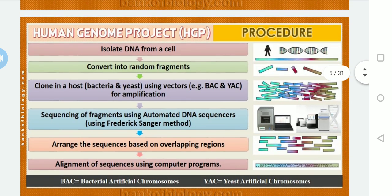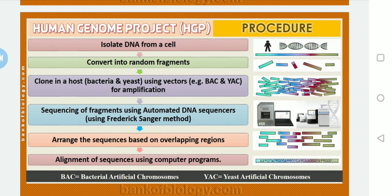When it comes to the procedure used in HGP, this is very important and may be asked as an exam question. The commonly used hosts for sequencing were bacteria and yeast as vectors. These are known as BAC (Bacterial Artificial Chromosome) and YAC (Yeast Artificial Chromosome).